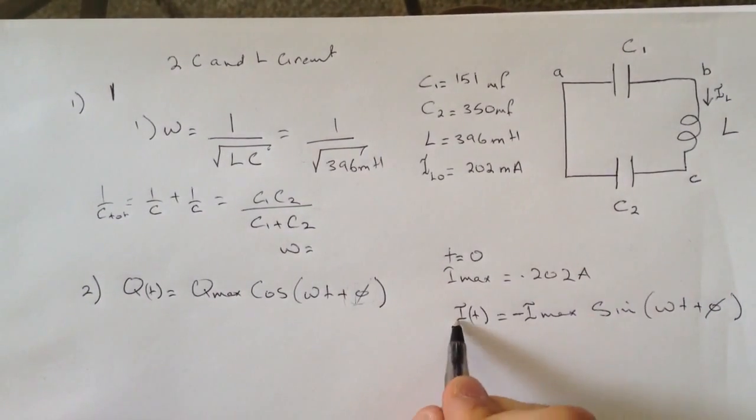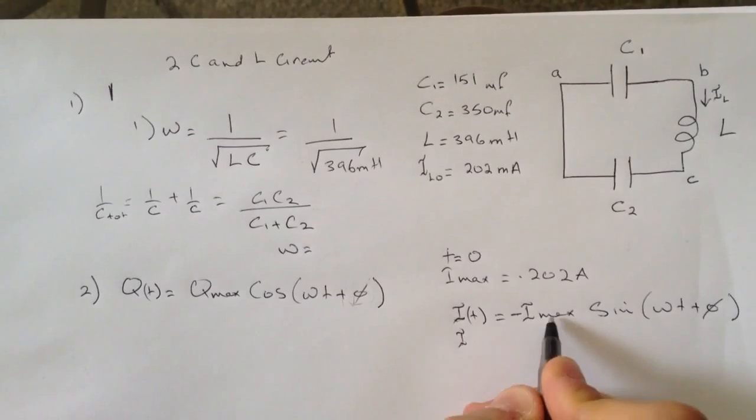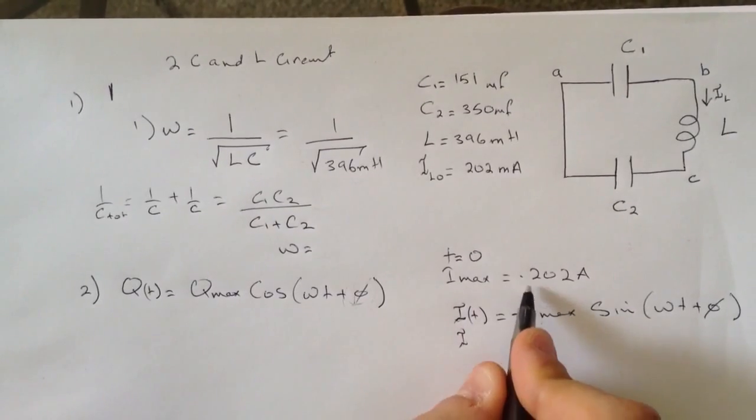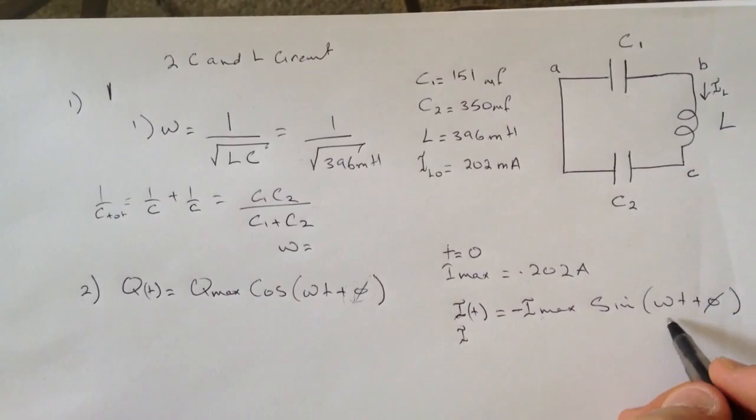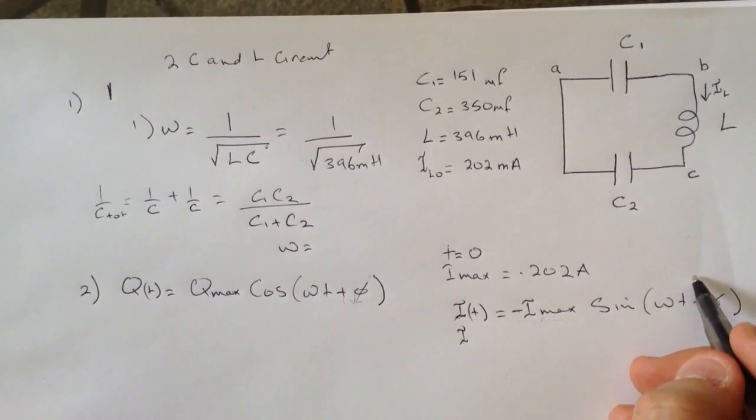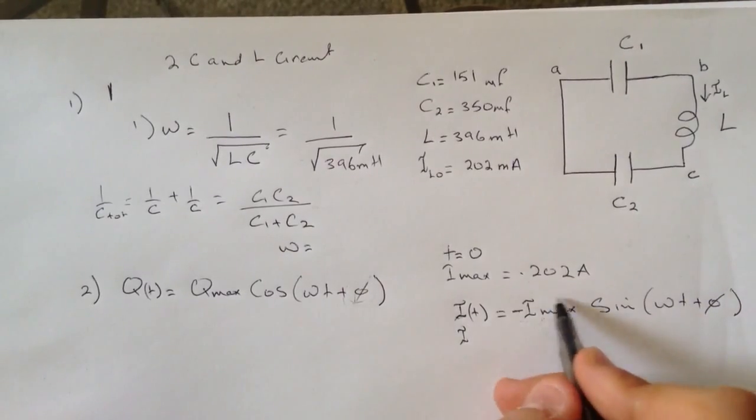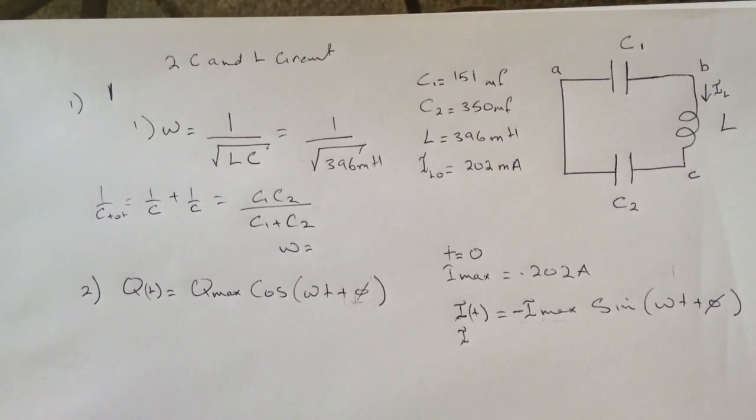So what you want to do is look here - because we have the I max positive at time equals zero, this term should be one, and this should be minus one because we need this to be positive since this is the initial conditions.